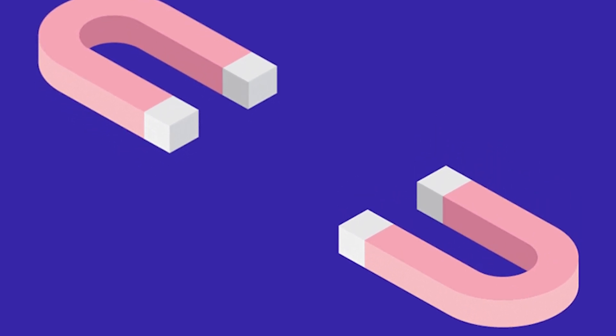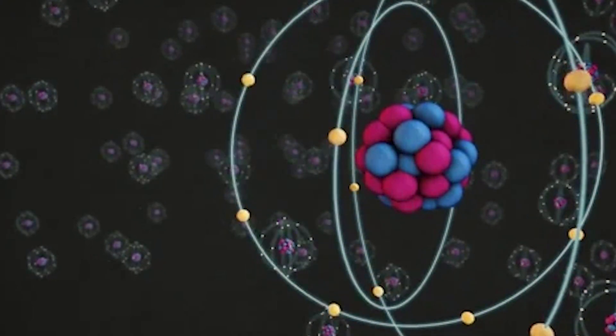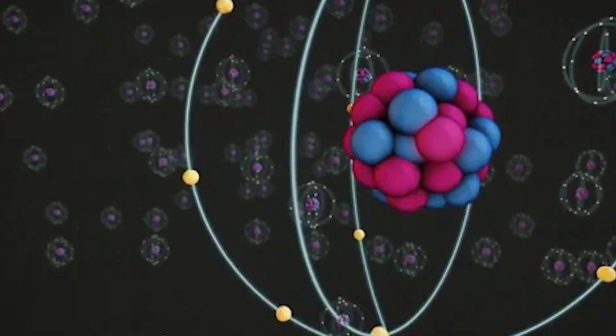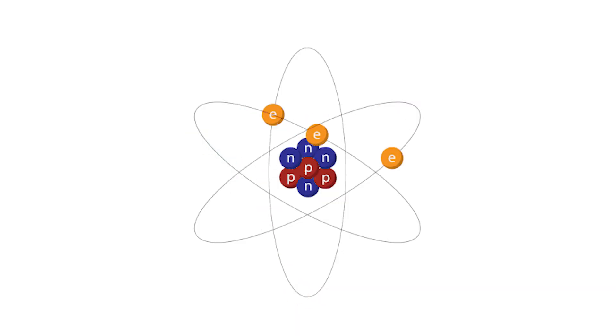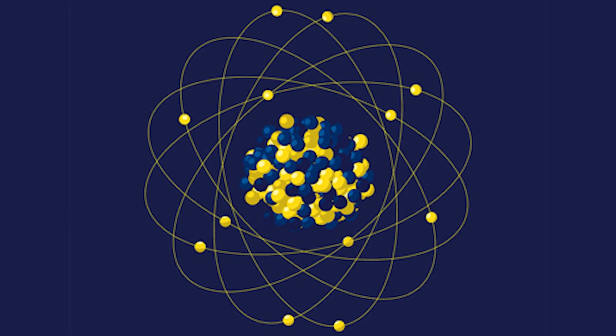Magnetism is a phenomenon in which objects attract or repel certain materials. We know that matter is made of atoms, and atoms are made of moving protons and electrons. In most materials, atoms consist of electrons that spin in different directions.